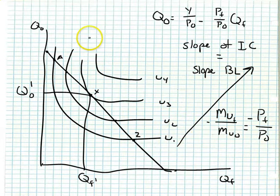Again, utility curve 3 at point X is a point where the ratio of the marginal utilities of food to other goods is equal to the ratio of the prices: negative marginal utility of food relative to other goods equal to the negative ratio of the price of food to the price of other goods.